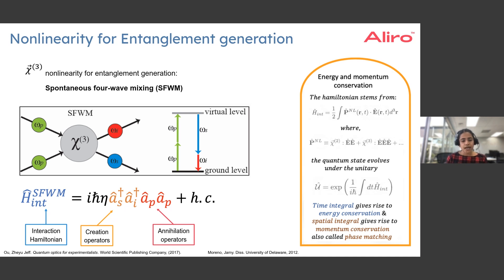In this case, two pump photons will be consumed in the process to generate two output photons that are entangled, which are signal and idler. This is essentially represented by the interaction Hamiltonian written here.